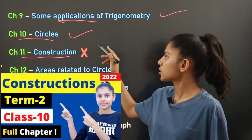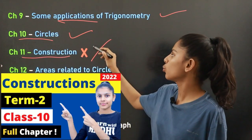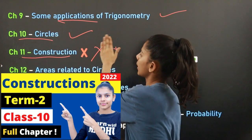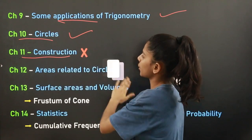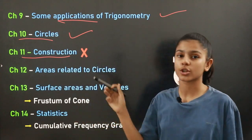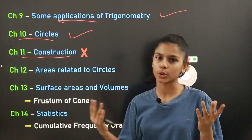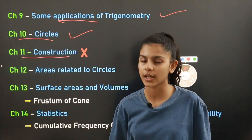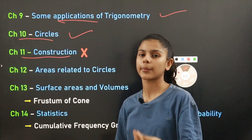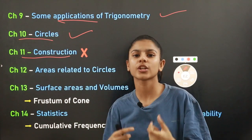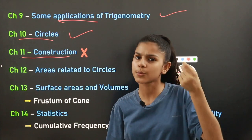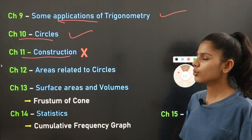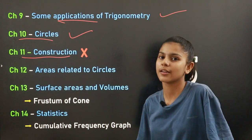Chapter eleven is Construction. The entire construction chapter has been removed — it is marked with a red cross, meaning the whole chapter is gone. So out of the 15 chapters in the Maths book, one full chapter has been removed, leaving 14 chapters. Within those 14 chapters, some additional topics have also been reduced.